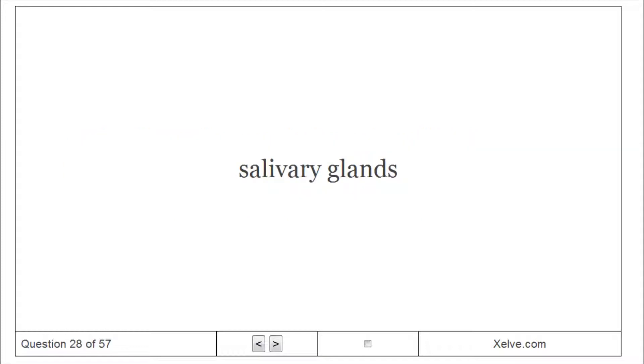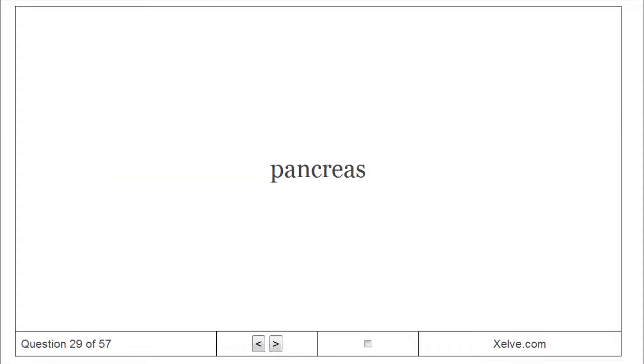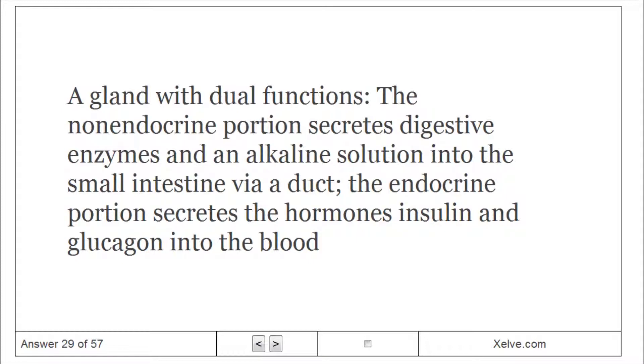Salivary glands – exocrine glands associated with the oral cavity. The secretions contain substances to lubricate food, adhere together chewed pieces into a bolus, and begin the process of chemical digestion.